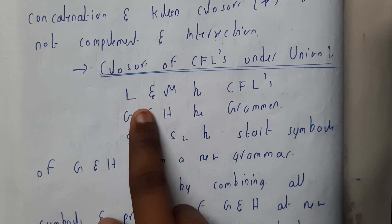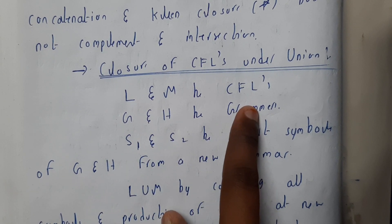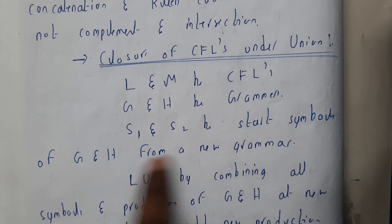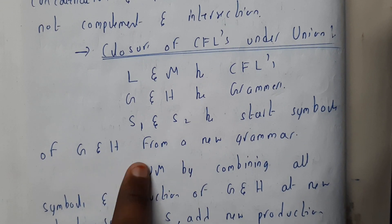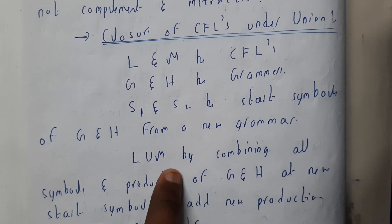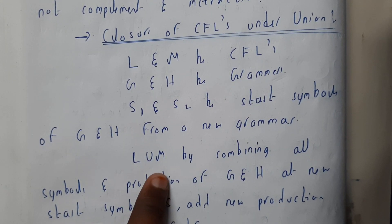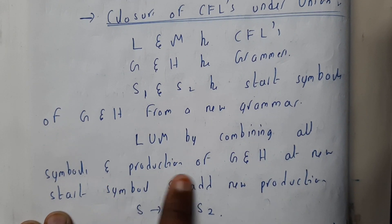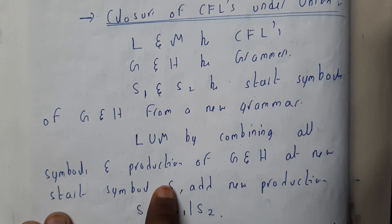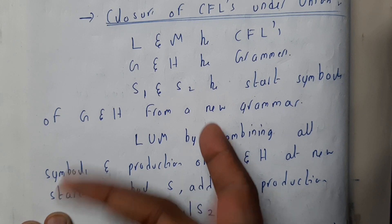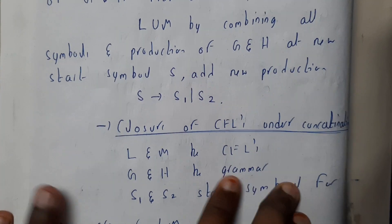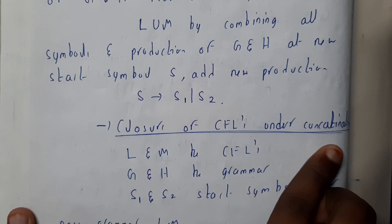For everything the process will be similar. We'll be assuming L and M as CFLs, G and H as grammars, and S1 and S2 as the start symbols. G and H form a new language. So L union M is context-free — by combining all the productions of G and H with a new start symbol, they should start at either S1 or S2.